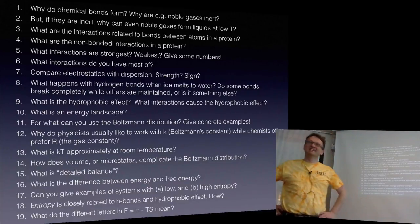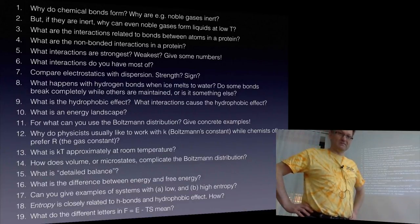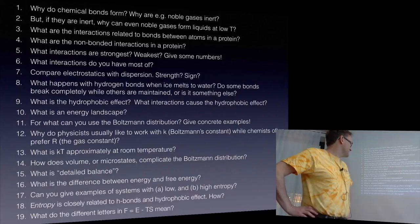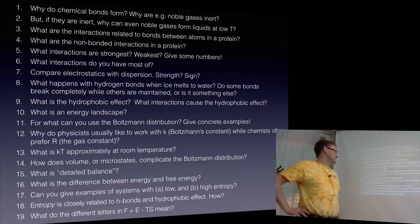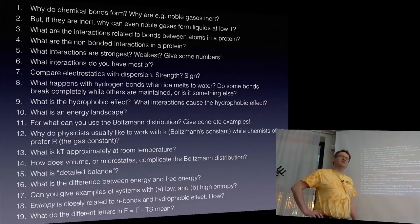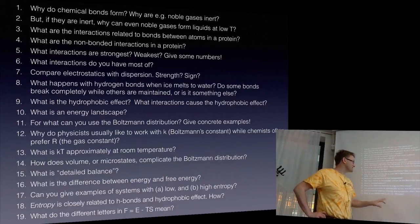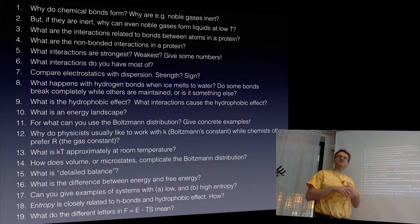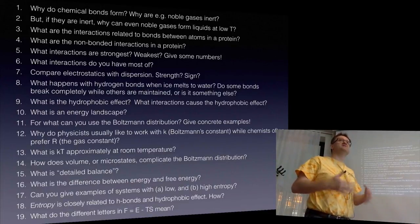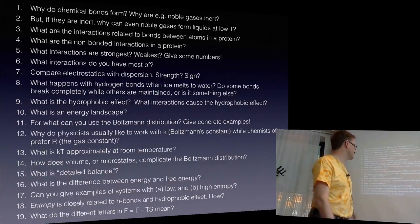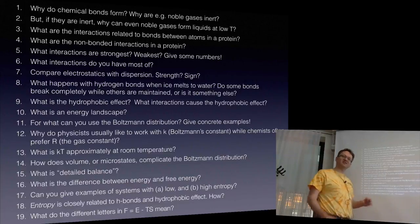Free energy equals energy minus temperature times entropy: F = E − TS. One important problem: when do we mean 'energy' and when do we mean 'free energy'? It's an astronomically bad naming decision — we should have called free energy something like 'free work.' You'll notice that both I and other authors often drop the 'free' prefix and just say 'energy landscapes,' but technically most of those are free energy landscapes. When using the equations, it's important to know which one you mean.